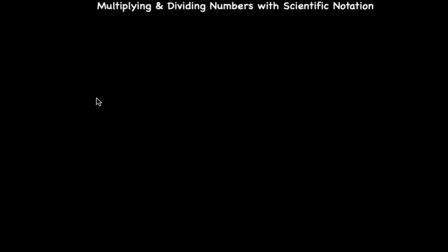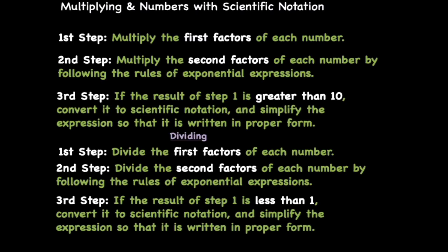We'll begin by multiplying two numbers written in scientific notation. There are steps that must be followed, so I'm going to pull up those steps now. We also have steps for dividing as well. This looks and sounds overwhelming — however, once I go over some examples, it will become much clearer.